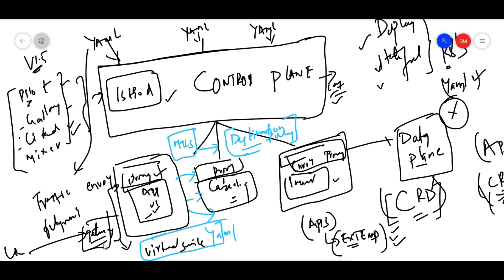The end-to-end flow is: when a client comes in, it reaches the gateway. The gateway routes to the virtual service. The virtual service goes to the sidecar proxy. The proxy forwards to the application. The application responds back through the proxy to the client.